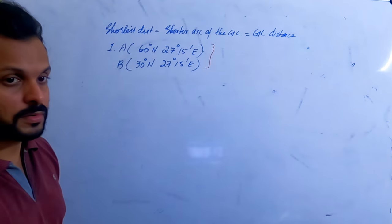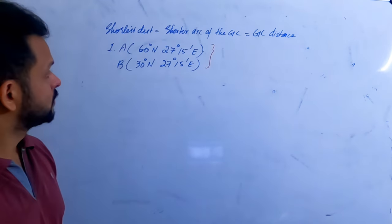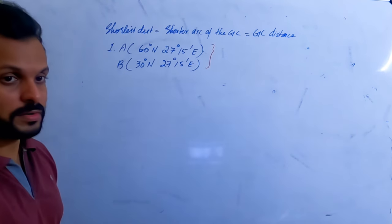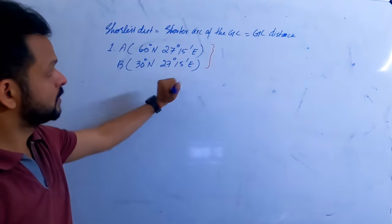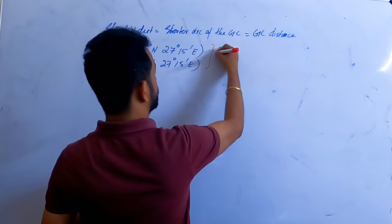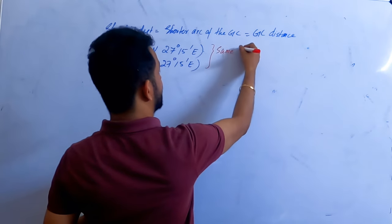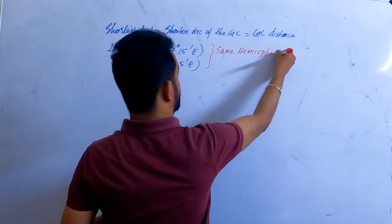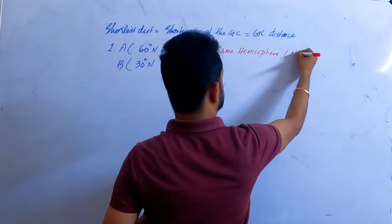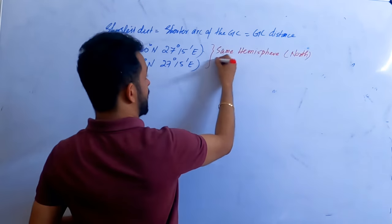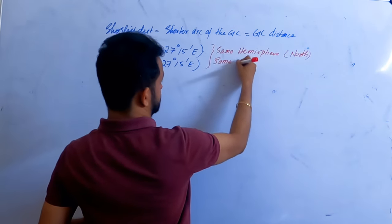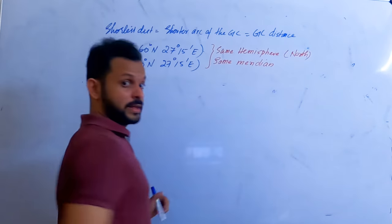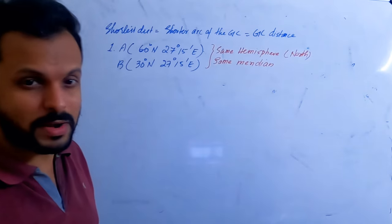Point A is towards the north pole and point B is towards the equator, but they both lie on the same line. This is a case where you can talk about the same hemisphere — the north hemisphere — and the same meridian case.